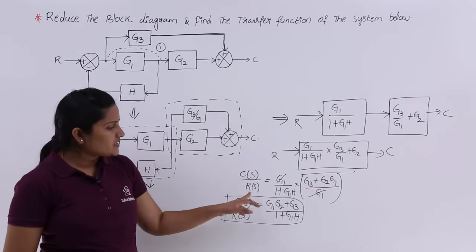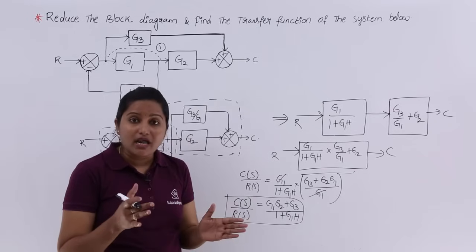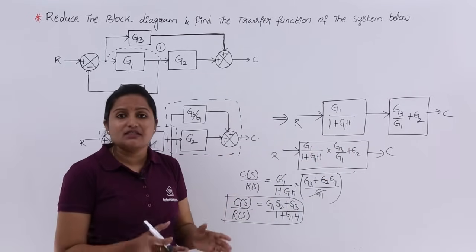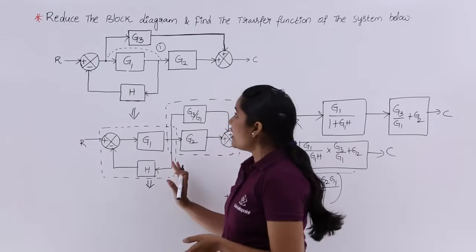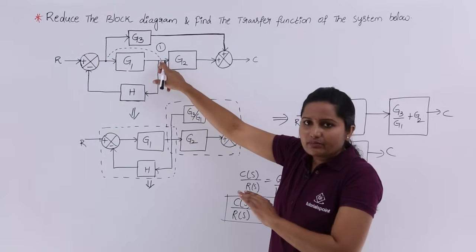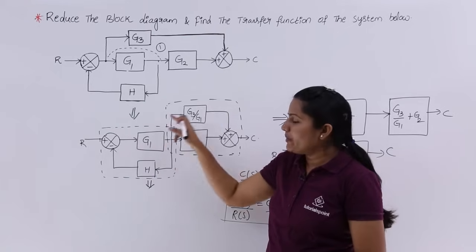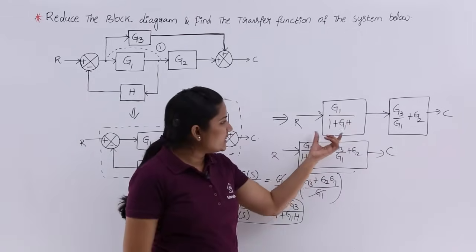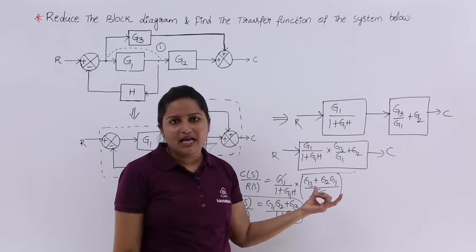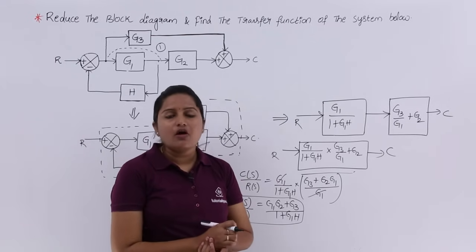This is the transfer function C(s)/R(s). When asked for the transfer function, we reduce the block diagram into a single block — the gain of that block between input and output represents the total transfer function of the system. I identified the branch point as an obstacle, moved it ahead of G1, which allowed me to reduce the feedback loop and parallel elements. After reducing those, I had two series gains; multiplying them gave the single total gain of the system.